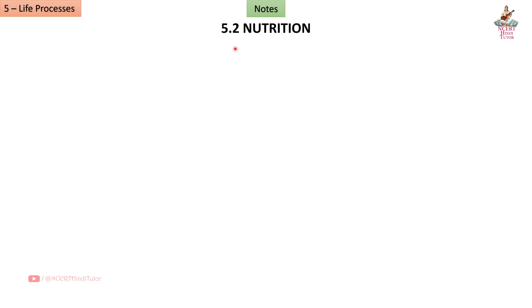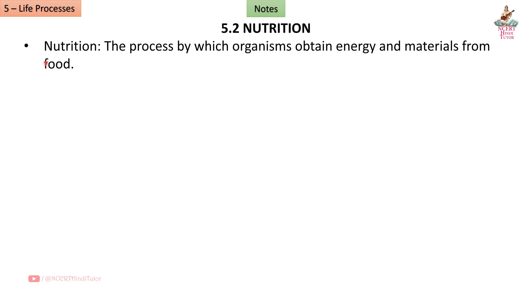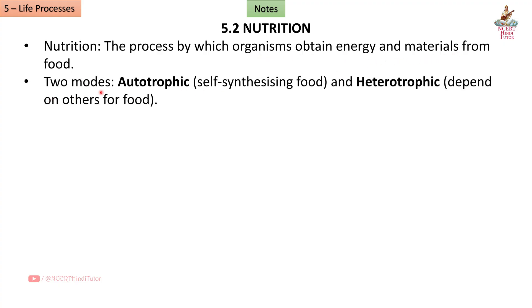Section 5.2: Nutrition is the process by which organisms obtain energy and materials from food. There are two modes: autotrophic, meaning self-synthesizing food, and heterotrophic, meaning depending on others for food.